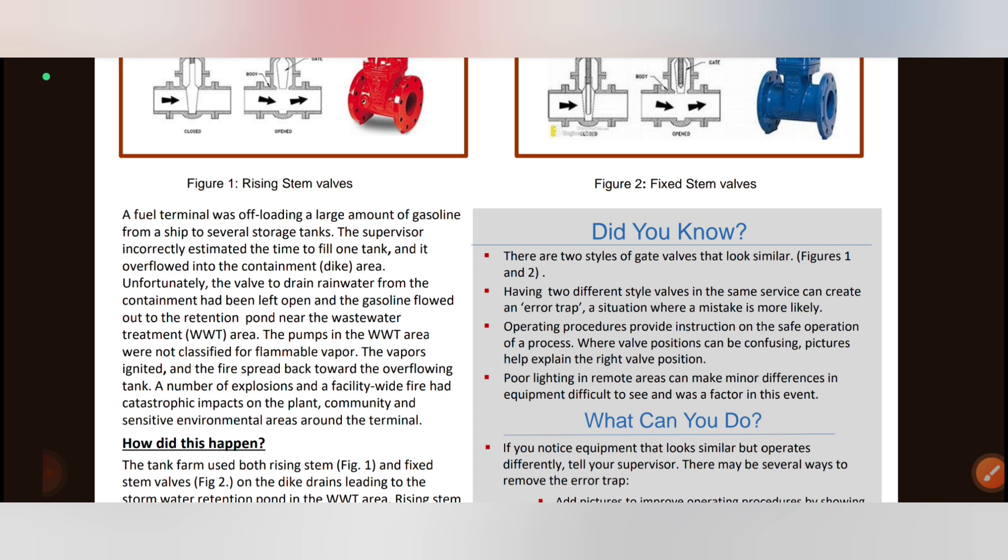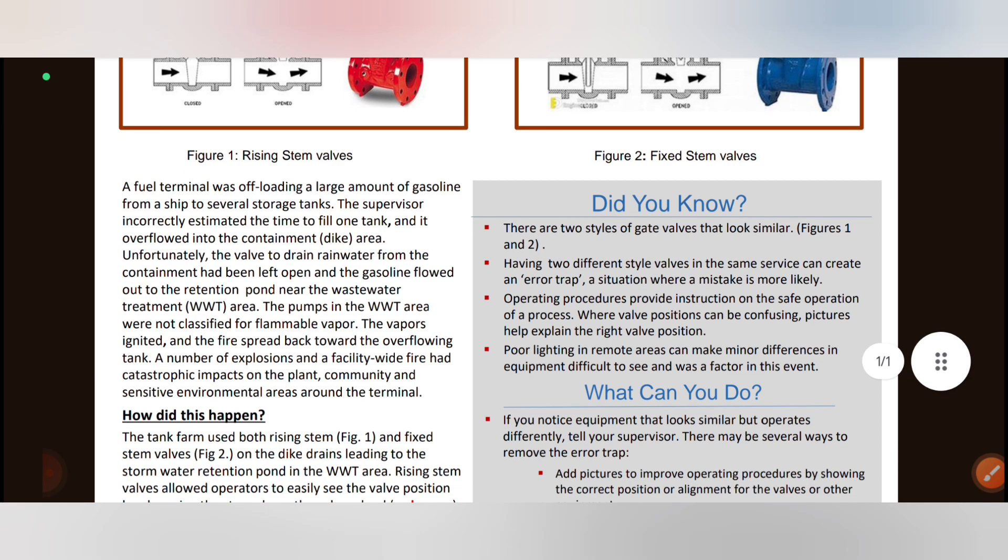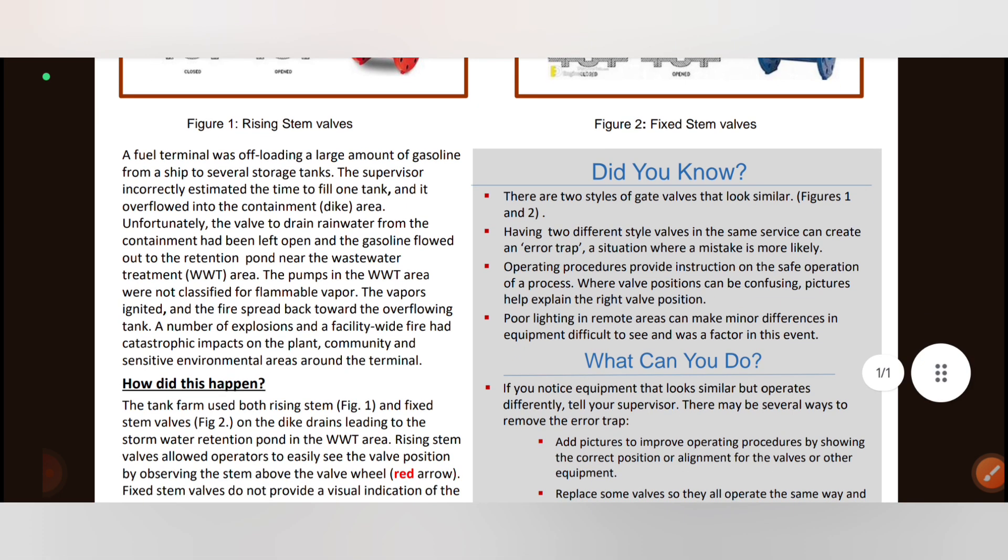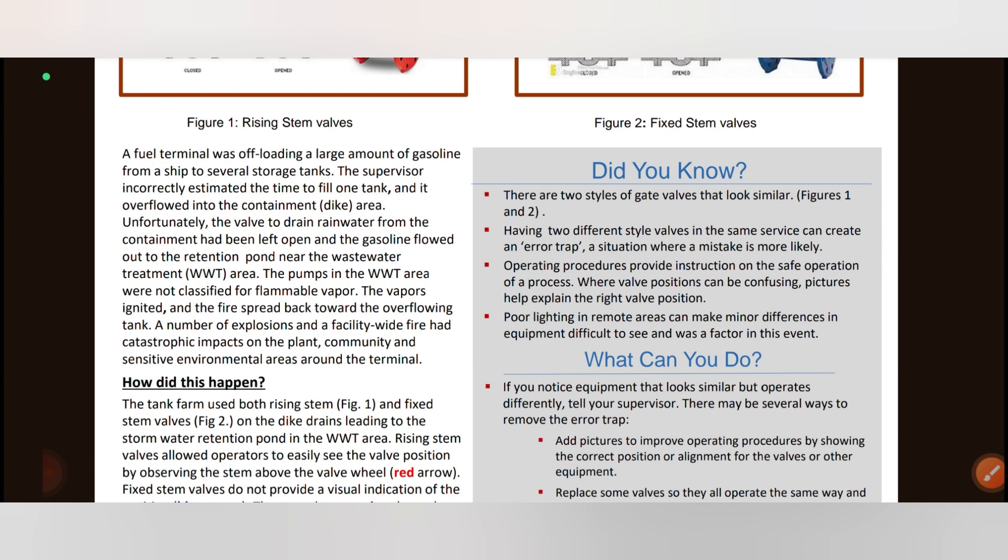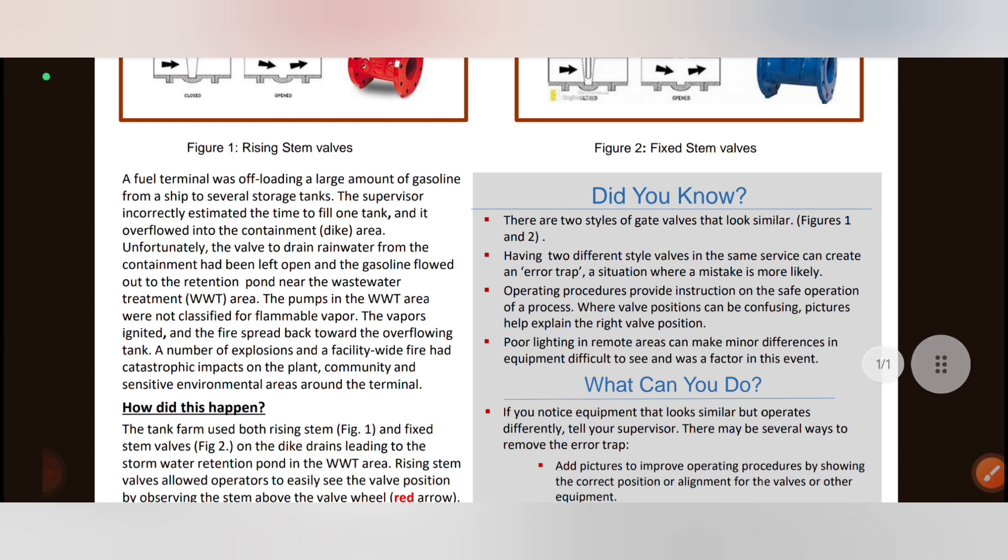A fuel terminal was offloading a large amount of gasoline from a ship. The ship is transferring to a tank farm. The fuel terminal is a tank farm. It is a storage farm. This is a common procedure when unloading gasoline to the tank there.